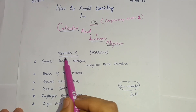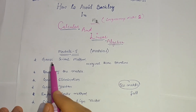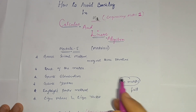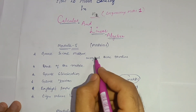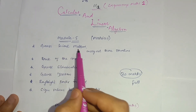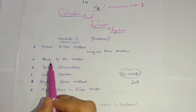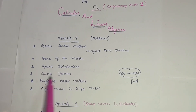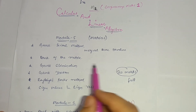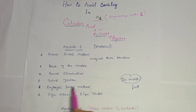First, attempt Module 5 — it is all about matrices, a PYQ-based concept. The topics you should cover are: Gauss-Seidel method (they ask you to carry out three iterations), rank of the matrix, Gauss elimination, Gauss-Jordan method, Rayleigh's power method, and eigenvalues and eigenvectors. Cover these topics and you can score 20 marks. This is the passing module of this subject — keep this point in mind.